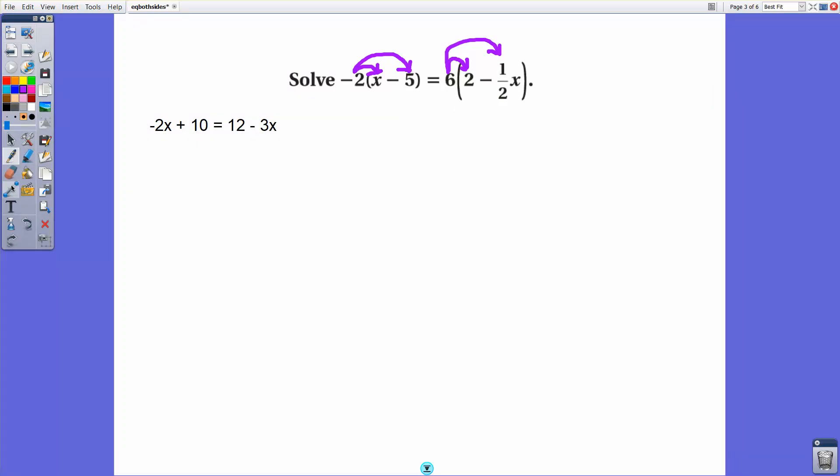Now what we'll do is because we have a binomial expression, a value times x plus a constant on both sides, this is a case where we're going to want to move the x term that is lower, that has a lower coefficient. So negative 2 and negative 3, this coefficient is lower. Negative 3 is less than negative 2. So we will add 3x to both sides here.